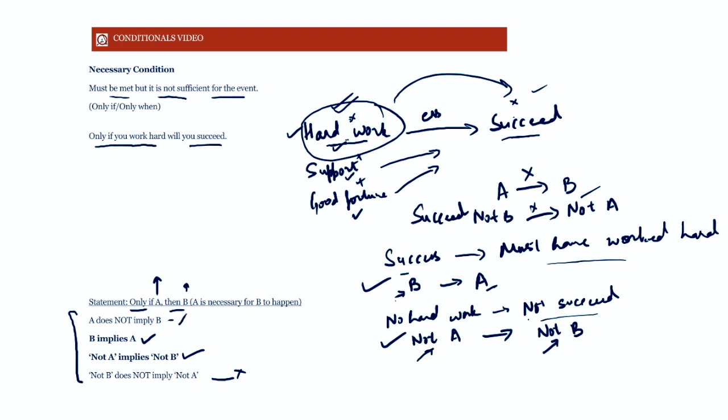So for a necessary condition, B implies A and not-A implies not-B are implied, while A implies B and not-B implies not-A are not implied — which is the exact opposite of a sufficient condition. Given 'only if A then B,' A is the necessary condition, so B implies A and not-A implies not-B. We'll discuss how these are used in questions shortly.